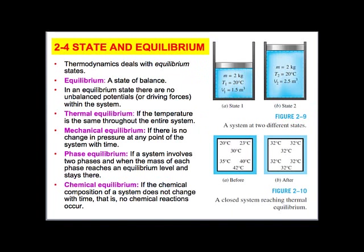Let's also define what we mean by state and equilibrium. So when we talk about equilibrium we're really talking about a state of balance. And there's different types of balances we can consider. One is thermal, so the temperature is the same throughout the system. Mechanical, pressure is the same at any point of time. Phase, when we have two phases each phase reaches an equilibrium level and remains there. And chemical. We will be considering primarily thermal and mechanical equilibrium for our calculations.